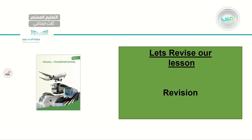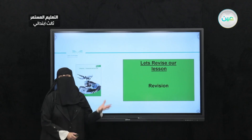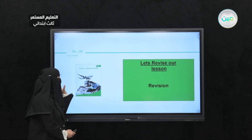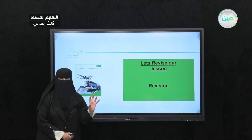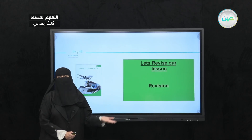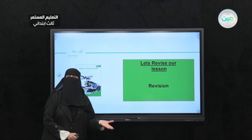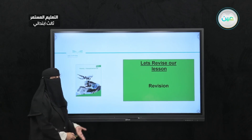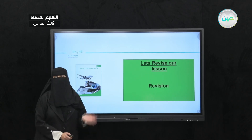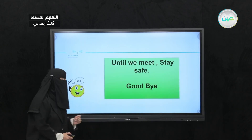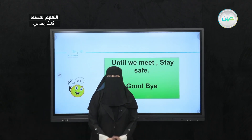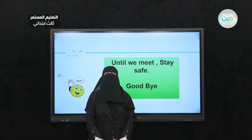Now let's revise what we have learned in this lesson. We tried to cover some of the information from the travel and transportation unit. We revised transportation we might use — car, bike — and we completed the exercises at page 30 and page 31. That was my revision, my dear student. Until I see you next time, stay safe. Assalamualaikum warahmatullahi wabarakatuh.